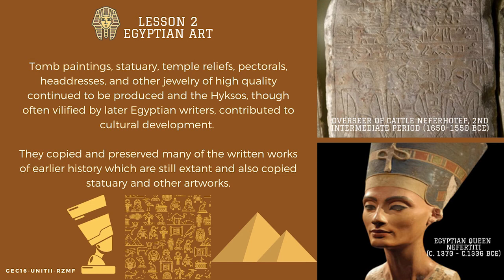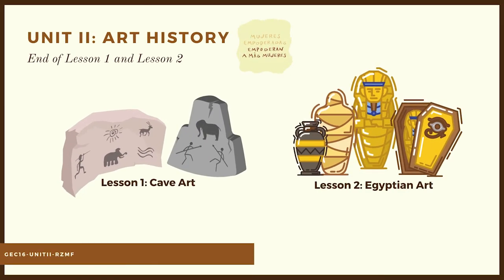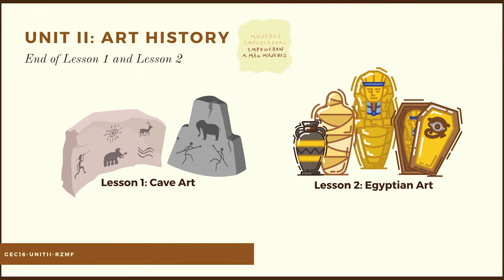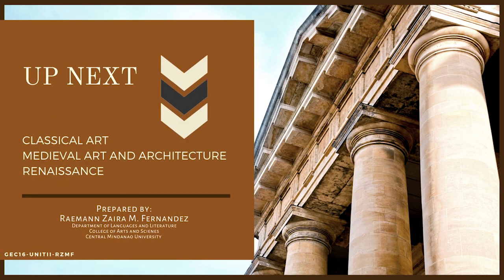As seen in the pictures, these are the overseer of Katal Neferhotep during the Second Intermediate Period, 1650–1550 B.C.E., and the Egyptian Queen Nefertiti. That is the end of our Lesson 1 on Cave Art and Lesson 2 on Egyptian Art. Coming up next will be lessons on Classical Art, Medieval Art and Architecture, and Renaissance. Thank you for watching.